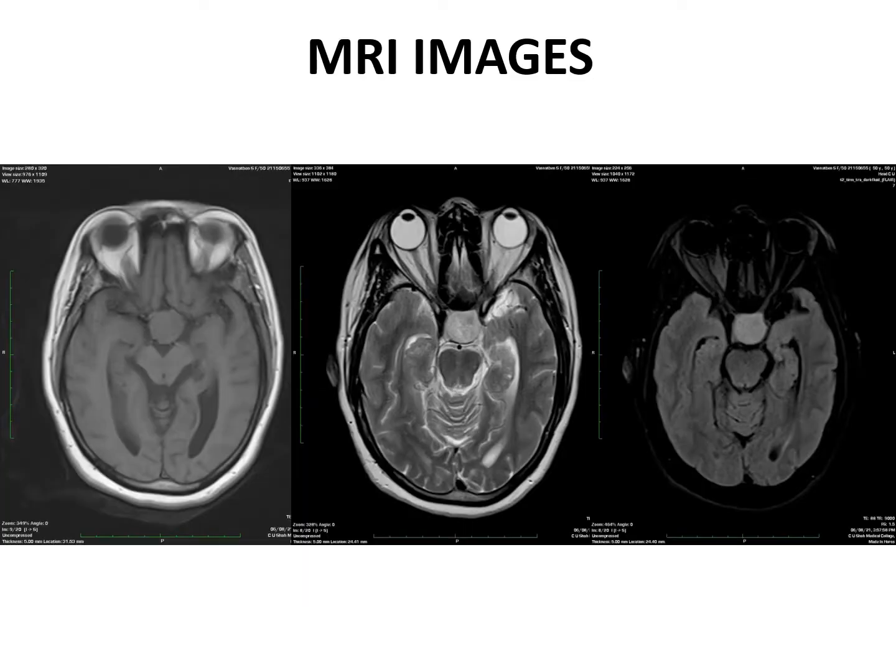Axial T1-weighted MRI images reveal a large well-defined iso- to hypo-intense lesion involving the sellar region. Axial T2-weighted and FLAIR images show a hyper-intense lesion involving the sellar region.